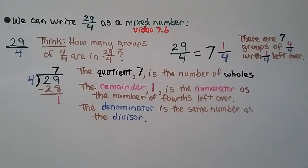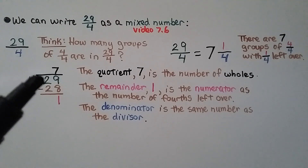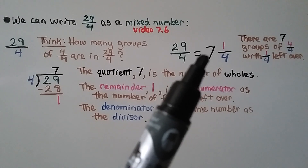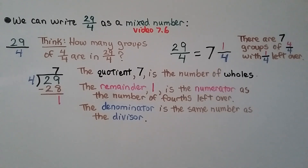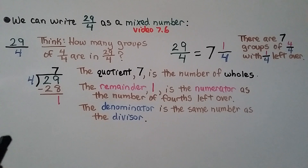And we can write 29 fourths as a mixed number. It's a fraction greater than 1, so we can change it into a mixed number by thinking of it as division: how many groups of 4 fourths are in 29 fourths? We think 29 divided by 4. 4 fits into 29 seven times — that 7 quotient is going to be the number of wholes, so we have 7 whole. 4 times 7 is 28, we get a remainder of 1. That remainder 1 is the numerator, and the denominator is the same — it's the divisor. There are 7 groups of 4 fourths with 1 fourth left over. We have 7 and 1 fourth as a mixed number.